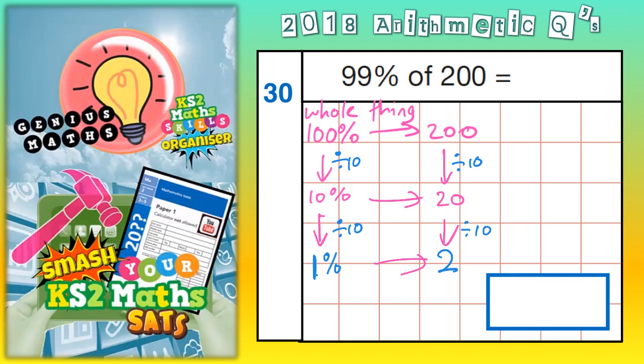So basically, now we know that 100% is worth 200, if we subtract the 1%, that will leave us with 99%. Remember, 1% is worth this 2 here that we've just worked out. So off the 200, we need to subtract 2, because 1% is worth 2.